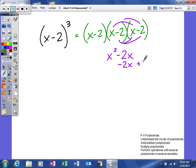That polynomial, when I multiply it together, X squared minus 4X plus 4. Now that is the product of these two, but I still need to multiply it by X minus 2.